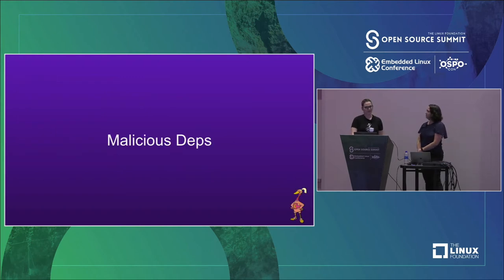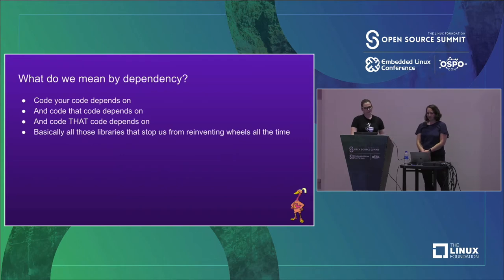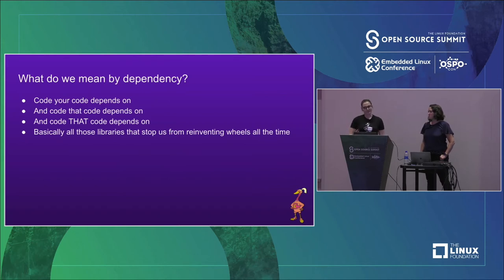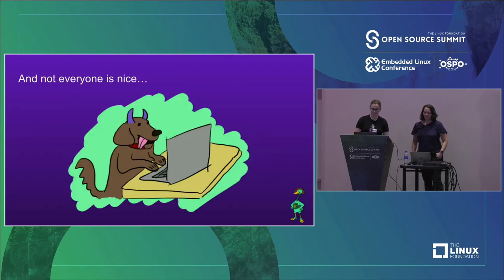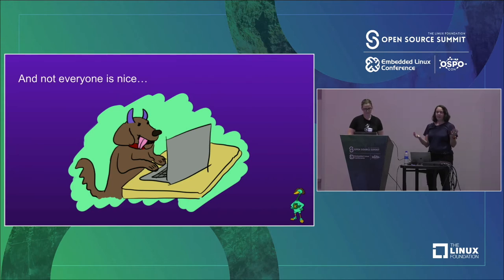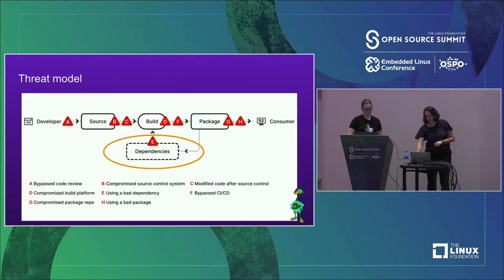So let's talk a little bit about malicious dependencies. It's probably good to make sure we're talking about the same thing when we say dependency. What we're talking about is the code that your code depends on, and the code that that code depends on - all of those libraries that we import so that we don't have to reinvent the wheel every time we want to do something. And of course, not everyone is nice. We have attackers trying to trick developers into downloading and using malicious dependencies. Today we're at the open source conference and that's where a lot of the risk lies.